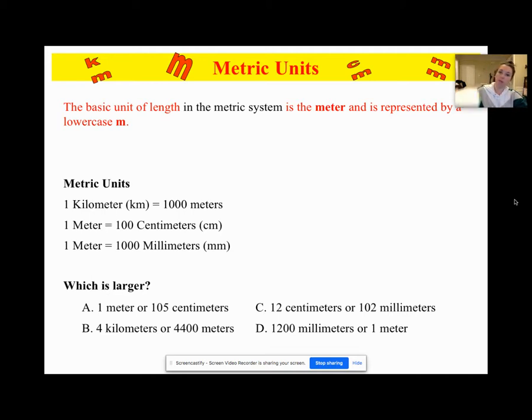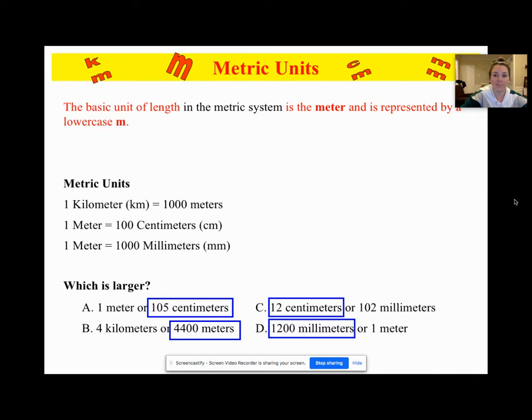So using your chart, I want you to have your chart with you. You can use your finger and just move back and forth. What is larger: A, 1 meter or 105 centimeters? Hopefully you thought 105 centimeters. B, 4 kilometers or 4,400 meters? 4,400 meters, good. C, 12 centimeters or 102 millimeters? 12 centimeters. D, 1,200 millimeters or 1 meter? 1,200 millimeters, good.